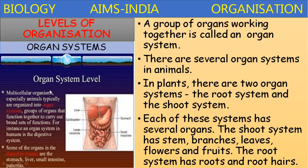Organ system level in multicellular organisms, especially in animals, are organized into organ systems. A group of organs that function together to carry out a broad set of functions is called an organ system. For instance, the digestive system is made up of different organs like the intestine, small intestine, large intestine, stomach, gallbladder, pancreas, and liver. All these organs function together to perform the digestion function.